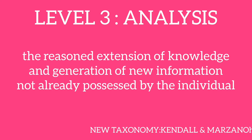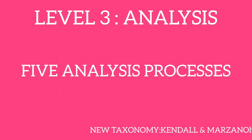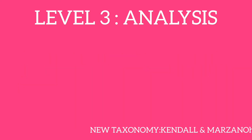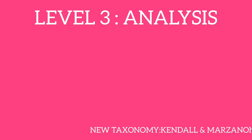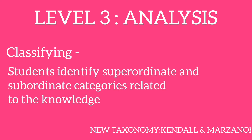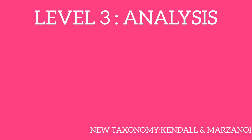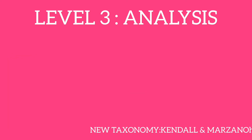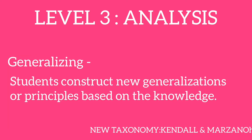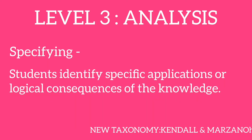The third level of the cognitive system is analysis. It involves the extension of knowledge and generation of new information not already possessed by the individual. There are five analysis processes. First is matching, where students identify important similarities and differences between knowledge components. Second is classifying, where students identify superordinate and subordinate categories related to the knowledge. Third is analyzing error, where students identify errors in the presentation or use of the knowledge. Fourth is generalizing, where students construct new generalizations or principles based on the knowledge. Fifth is specifying, where students identify specific applications or logical consequences of the knowledge.